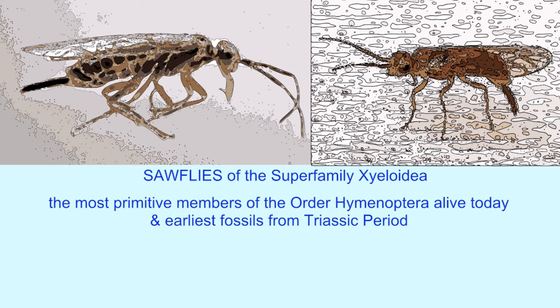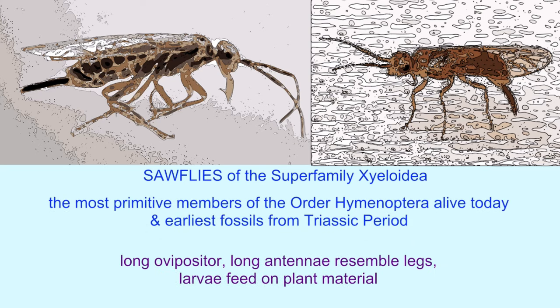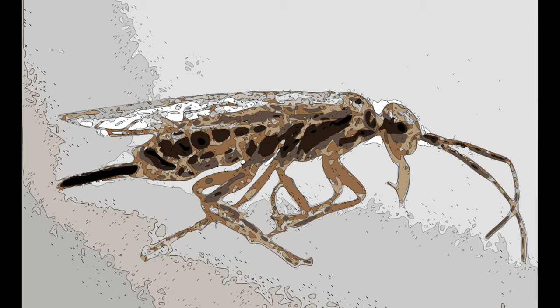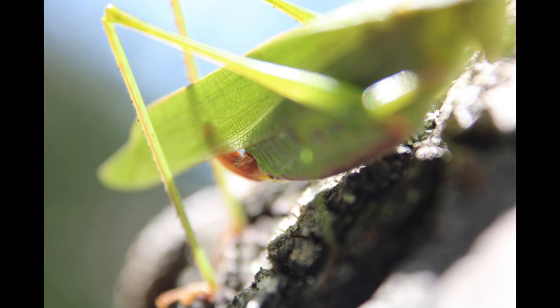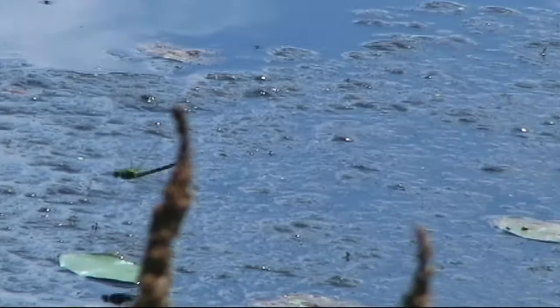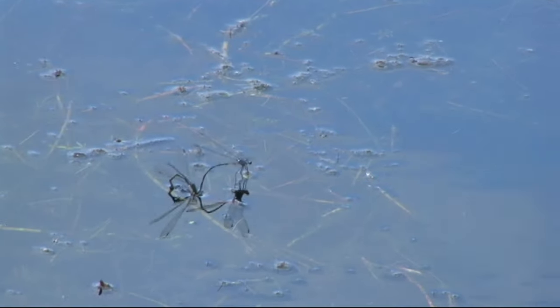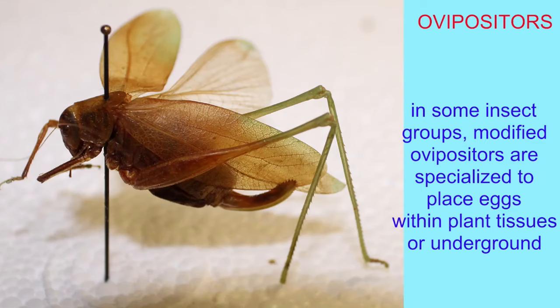Sawflies are not flies — they are actually related to bees, wasps, and ants. There are some members of the superfamily Xyeloidea which are still alive today. Females possess a long ovipositor, which isn't a stinger. Instead, it is used to saw through vegetation so that eggs can be laid within vegetation. All of the larvae feed on plant material.